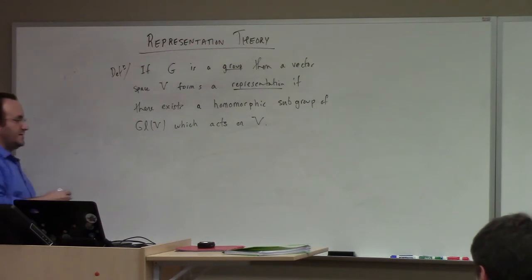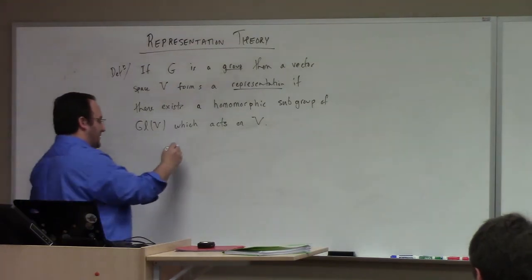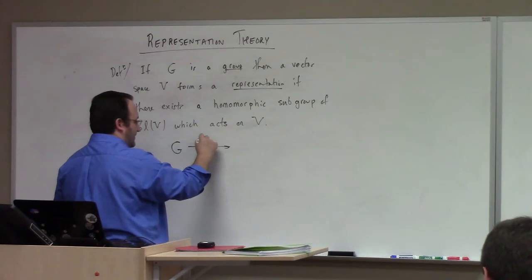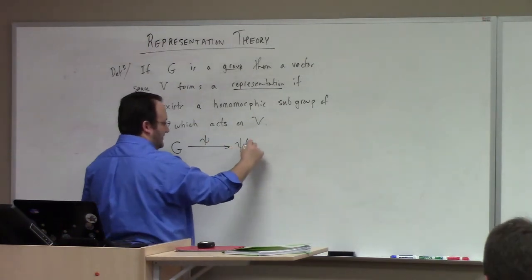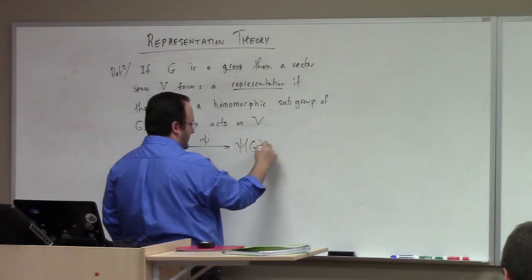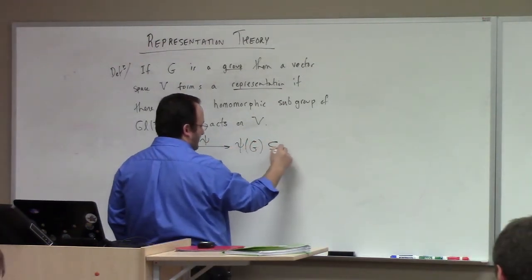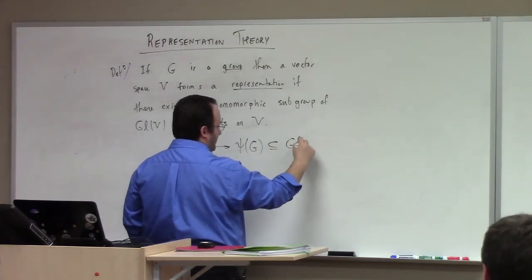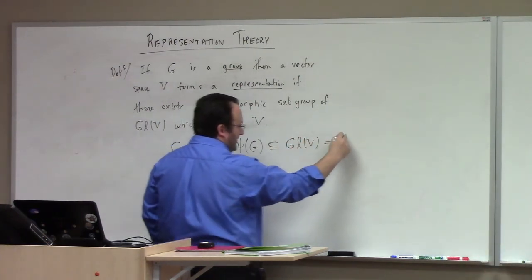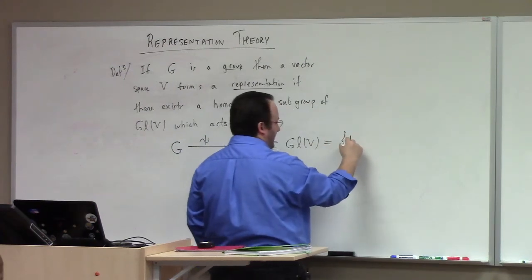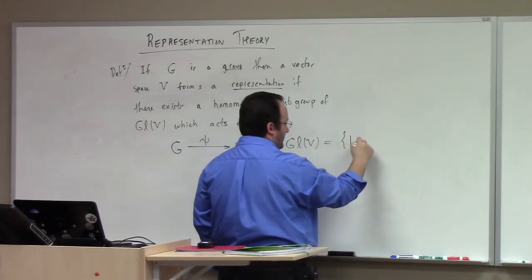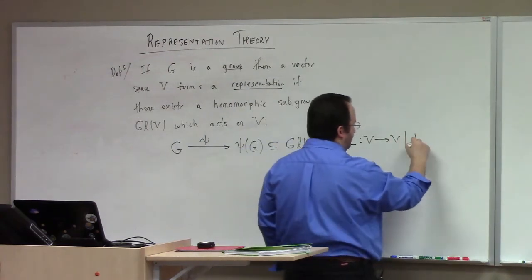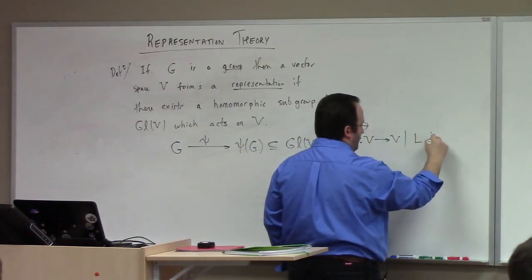So the idea here is that you've got G, you've got some homomorphism psi. Then psi of G is a subset of GL(V), GL(V) being L — mappings from V to V such that L is invertible.